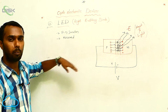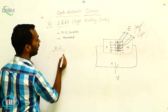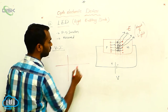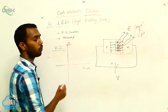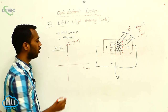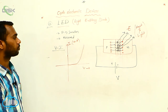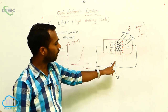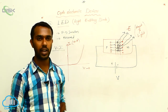This LED has a number of uses. In the VI characteristics — forward bias I am operating — V is on the x-axis and I is on the y-axis. In forward bias, we measure the current in milliampere. This is the VI characteristic of an LED. Light Emitting Diode converts electrical energy into optical energy, light energy. That's why it is an optoelectronic device.